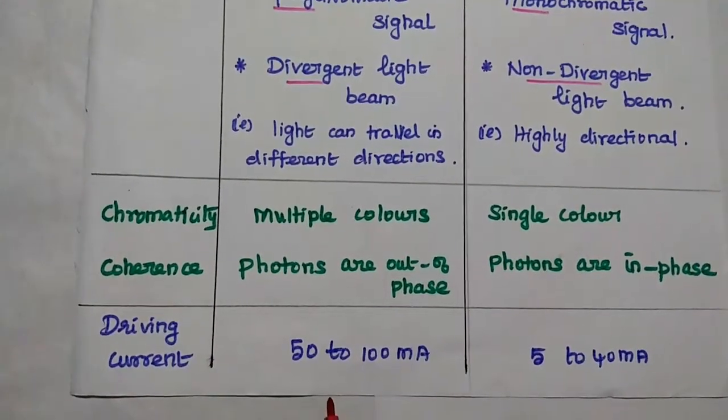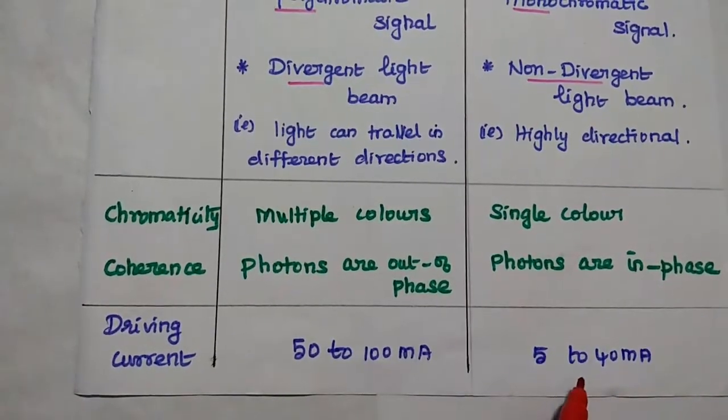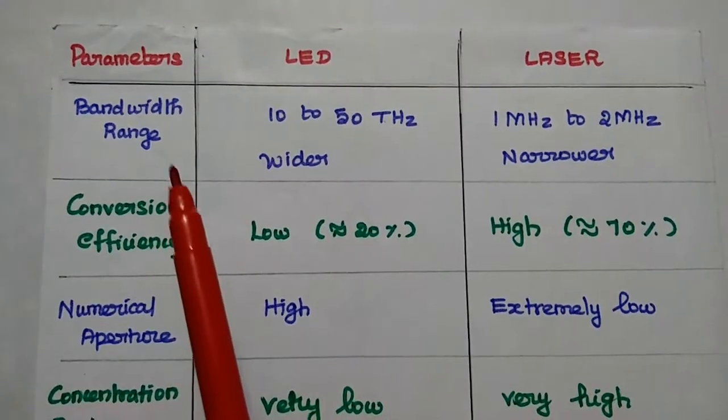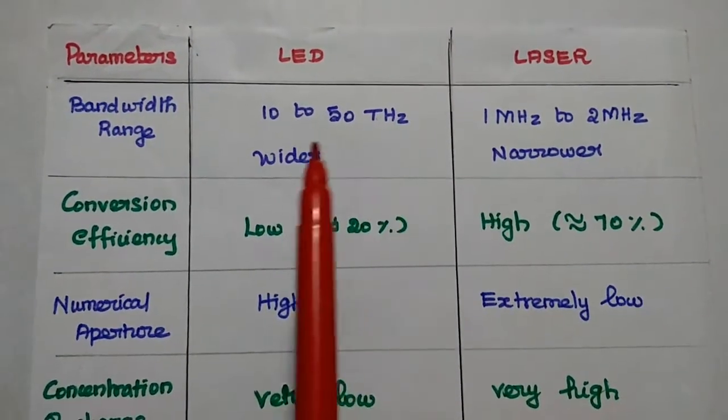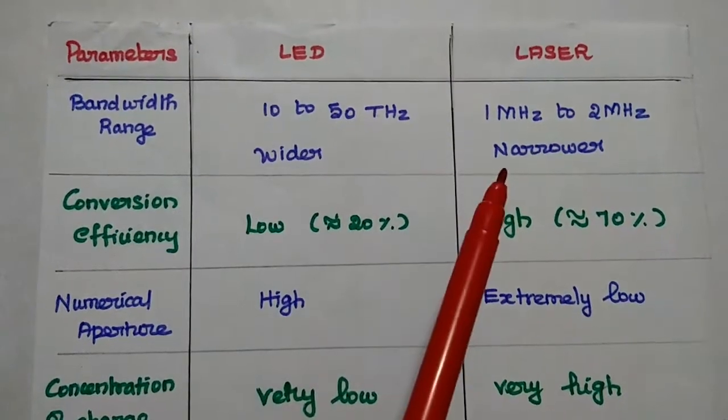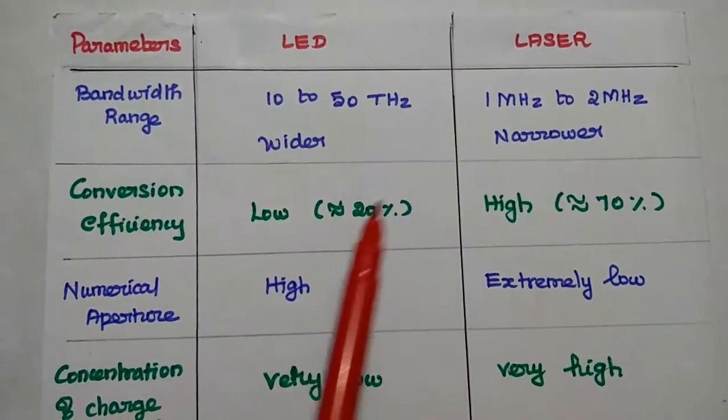Driving current is in the range of 50 to 100 milliamps for LED. For laser, it is only 5 to 40 milliamps. Bandwidth is in the range of 10 to 50 terahertz for LED, that is wider bandwidth. For laser, it is narrower, only 1 megahertz to 2 megahertz.